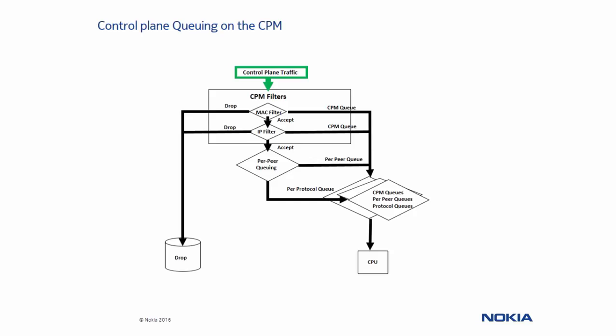MAC filters are processed first, then IP filters, if there is a match in the policy. The CPM filters can classify control plane traffic to use CPM queues. If CPM filters do not find a match and the default action is to accept, then TCP traffic from a peer will get sent to per-peer queuing. Last but not least, if all the above queues do not match, the per-protocol default queue will process the control plane traffic before it reaches the CPU.